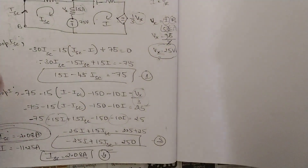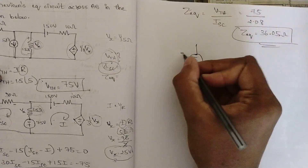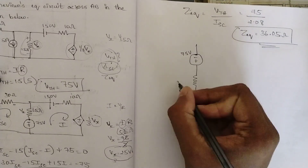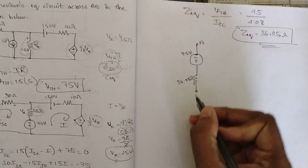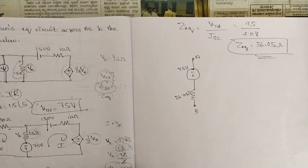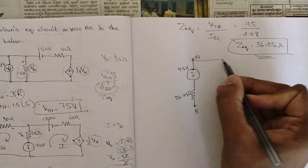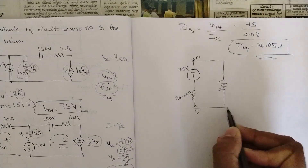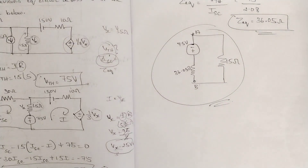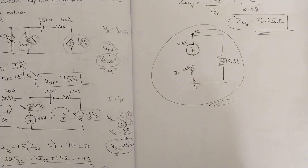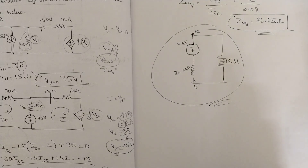Since the current came out negative, the polarity of the Thevenin voltage changes — it becomes −75 V (minus-plus orientation). The Thevenin equivalent circuit across terminals A-B consists of a 75 V source (with reversed polarity) in series with 36.05 ohms equivalent impedance. You can also include the 15-ohm load impedance if required. That's the final Thevenin circuit for this dependent-source problem.